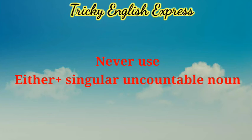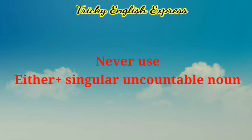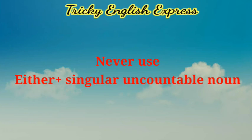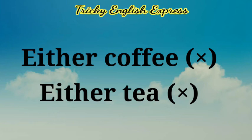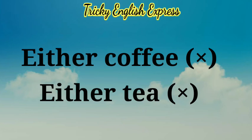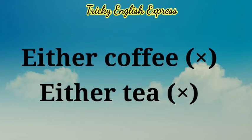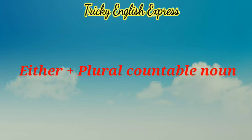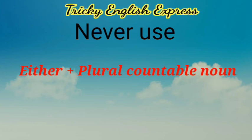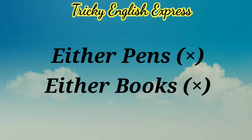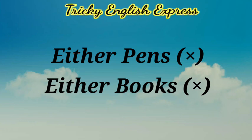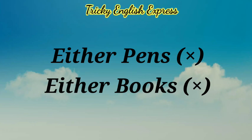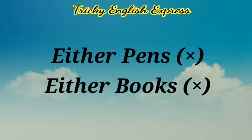After 'either of', we do not use a singular countable noun. For example, 'either of coffee' or 'either of tea' is wrong. Similarly, 'either paints' or 'either books' without 'of' is also incorrect. If you are doing this, it will be wrong.